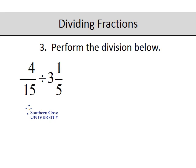In the next question we've got an improper fraction and we have a negative number to deal with as well. So this is negative 4 fifteenths divide by 3 and 1 fifth, 15 and 1 is 16 over 5.